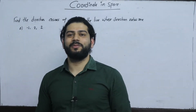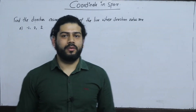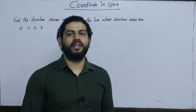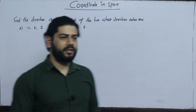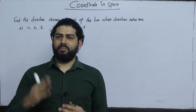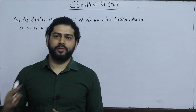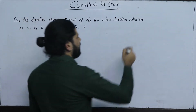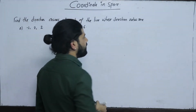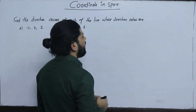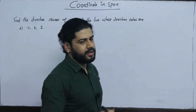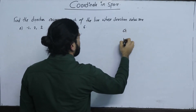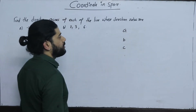Hello, I am going to show you the direction ratio and cosine. Normally, we have a direction ratio and a proportion of the direction cosine. We represent a, b, c as the direction ratio.